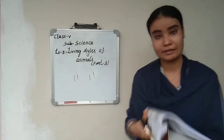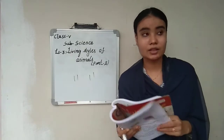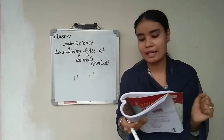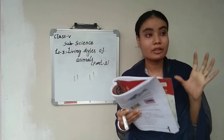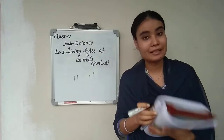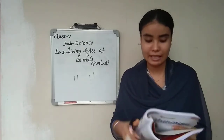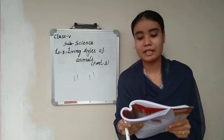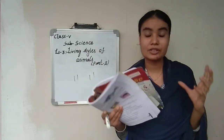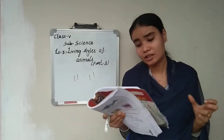Next is ostrich. Ostrich cannot fly but it can run with the help of its hind limbs. Next is duck. Duck is a water animal and it has hind limbs with a web — similar to a spider web. These webs help them to swim.